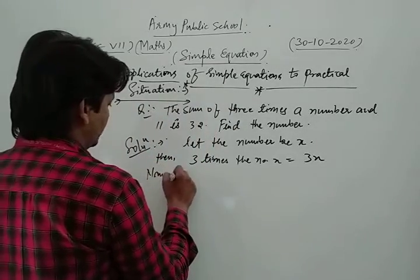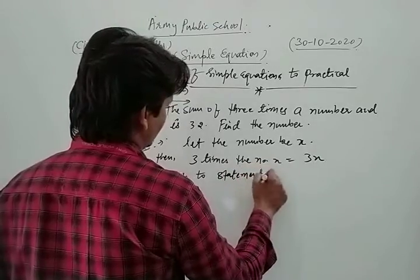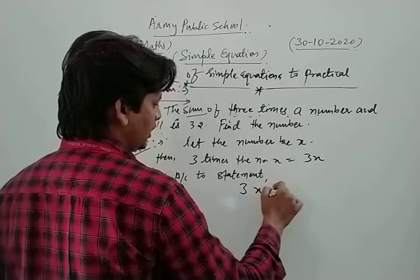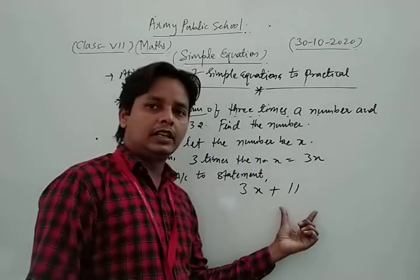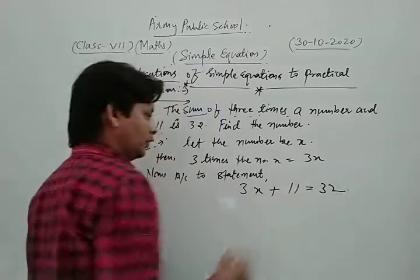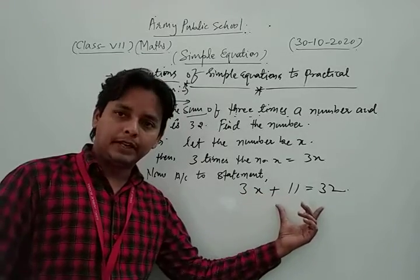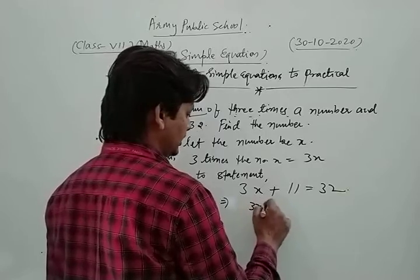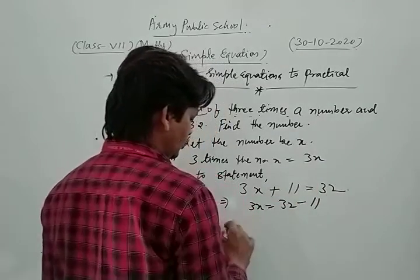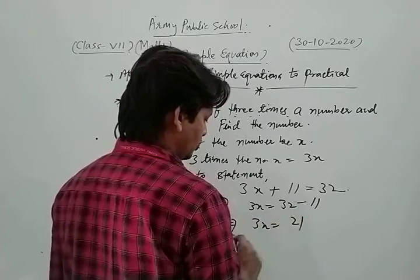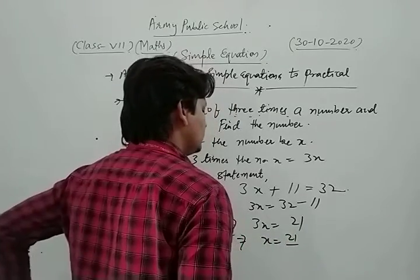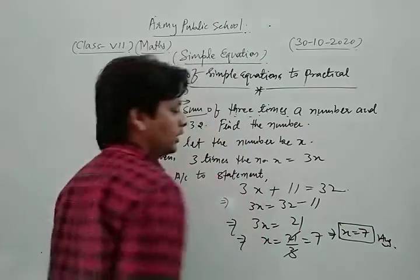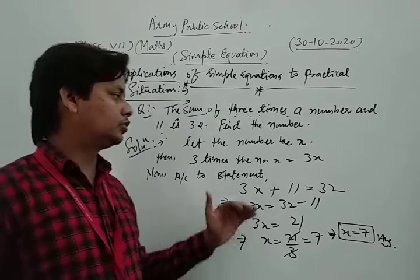According to the statement, the sum of 3 times the number and 11 is 32, so we form the equation: 3x plus 11 is equal to 32. We simplify: 3x is equal to 32 minus 11, which is 21. So the value of x is equal to 21 upon 3, which is 7. Thus the required number is 7. This is the method to solve this type of question.